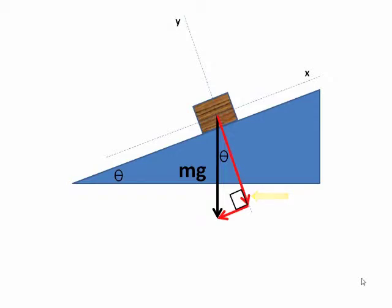We have these two components and this is how they are drawn. Now that side is the opposite of the angle and so it is mg sin theta. And this side is mg cos theta.